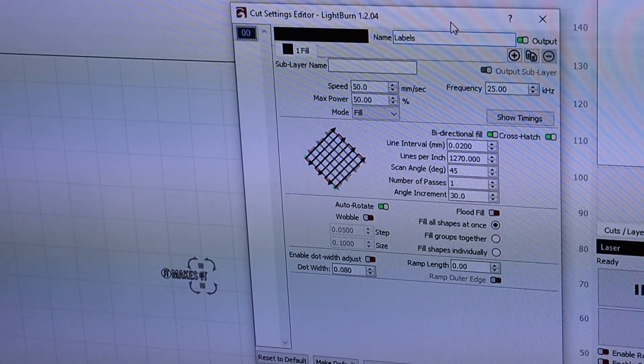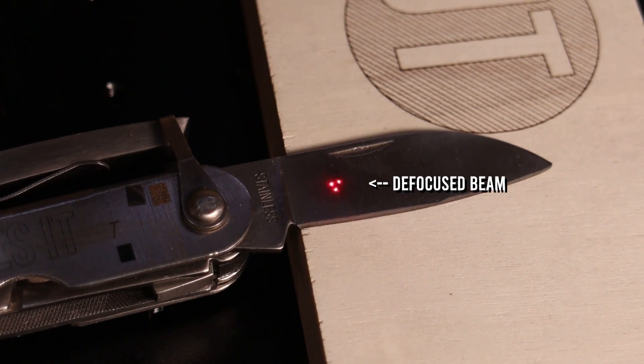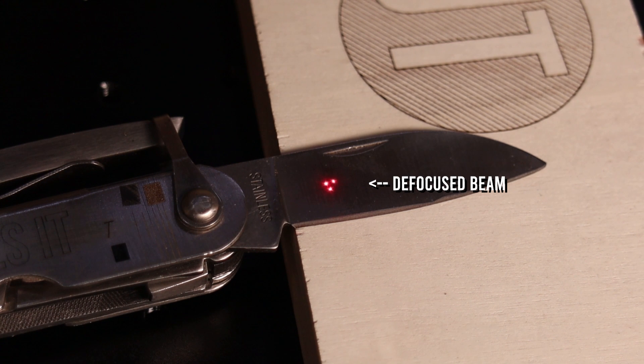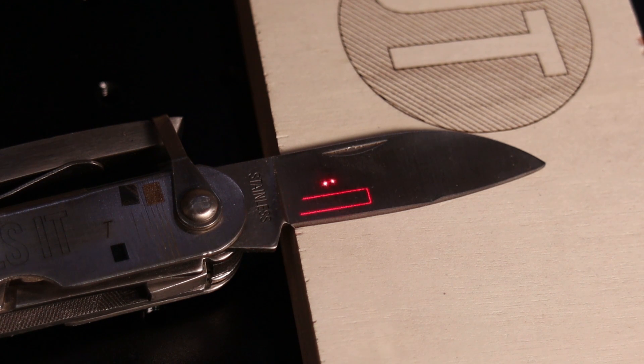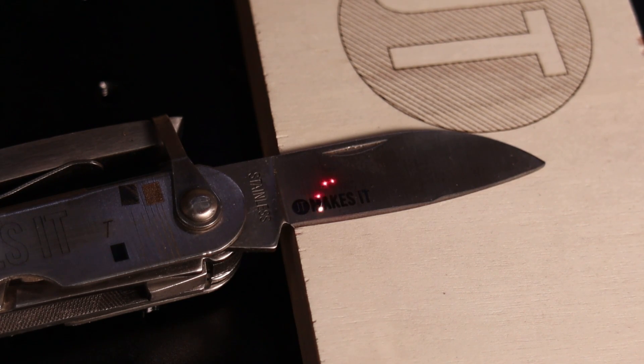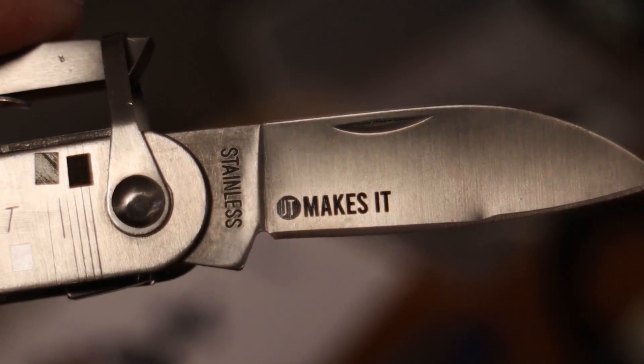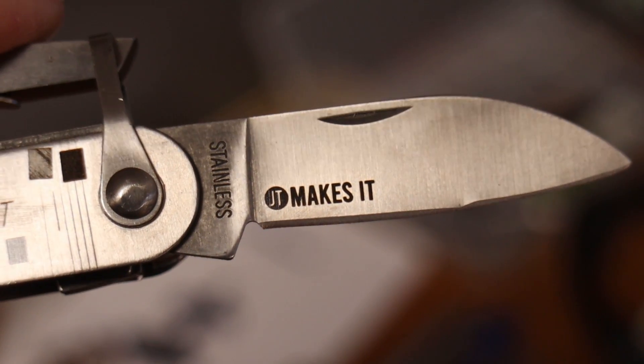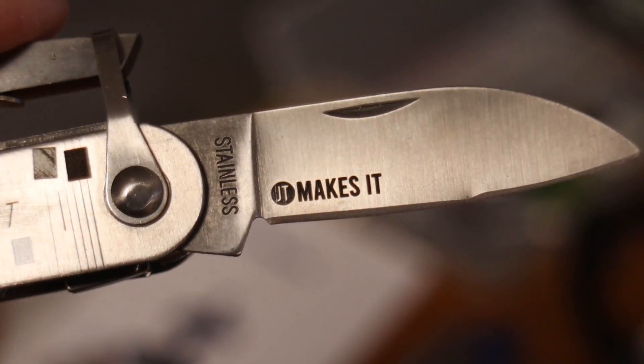You can also get very dark engravings on stainless steel. Using low speed and 4mm defocused beam you can produce very durable and dark engravings on stainless steel. This does not come off easily, not even with the use of abrasives.